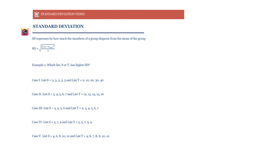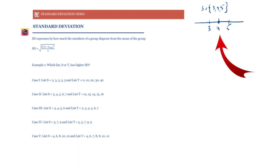Standard deviation is the dispersion of the elements of a set from the mean of the set. For example, using the number line: if we have a set S of three elements — 3, 4, and 5 — the mean is 4, right in the center, and SD calculates how far away the other elements of the set are from the mean.